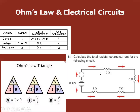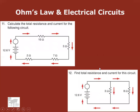In a series circuit, calculating total resistance is simple — just add all the ohms together. For example: 10 + 3 + 7 + 2 = 22 ohms. Done.